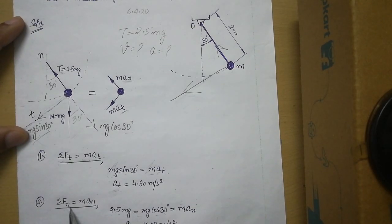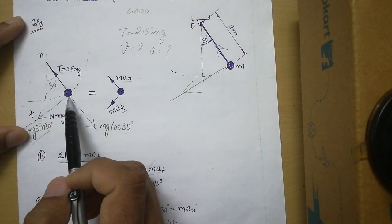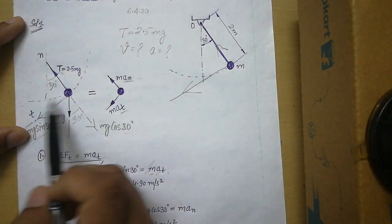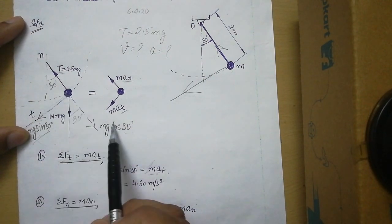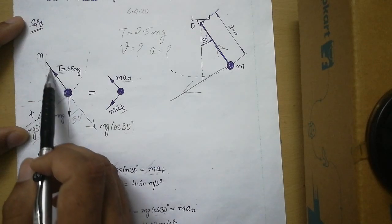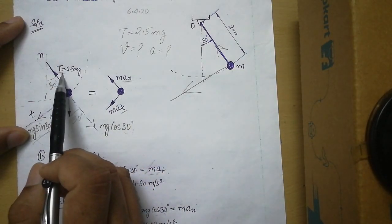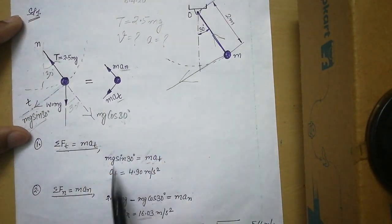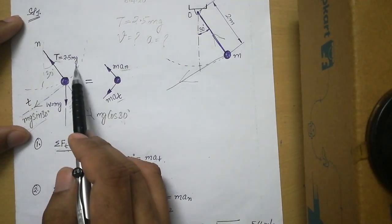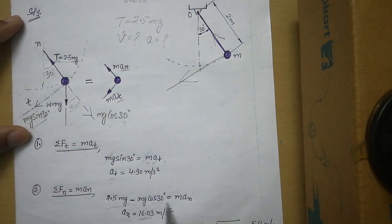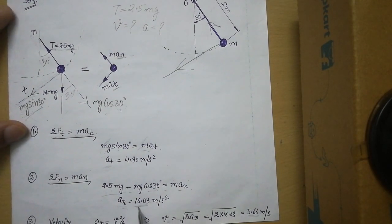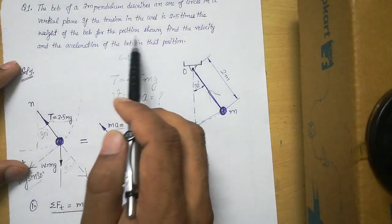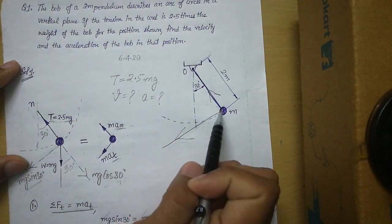Applying the second equation, summation Fn equals m·an: the forces along the normal are tension T and mg cos 30°. Tension acts in the direction of acceleration, so it is positive; mg cos 30° is negative. We write T minus mg cos 30° equals m·an. Substituting T equals 2.5mg and cancelling m, we get the normal acceleration an.